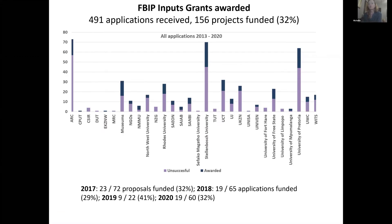So this graph shows our challenges. Since we started awarding grants in 2013, we've had about 491 applications and we funded 156 projects — that's only a 32% success rate. In 2017 we had 72 proposals and funded 23 of those. In 2018, it was 19 out of 65. In 2019, it was 9 out of 22.